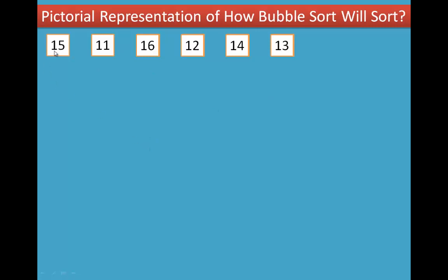When we start bubble sort, we can represent it pictorially. Given the numbers: 15, 11, 16, 12, 14, 13.